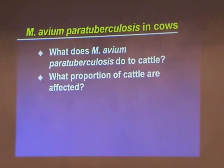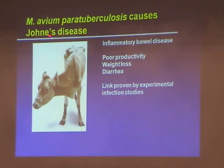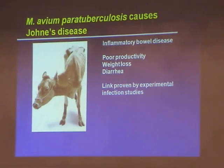So what does it do to the cows where it is found, and how many cattle are affected? This is what Mycobacterium avium paratuberculosis does. It causes a disease named for a German scientist, so it's pronounced Johne's disease, not John's disease. Johne's disease is a form of inflammatory bowel disease that has some similarities to Crohn's but is not identical to Crohn's. There's some chronic IBD, but you wouldn't look at one slice and the other and say this is exactly superimposable.